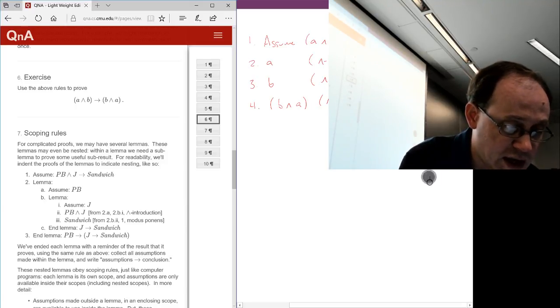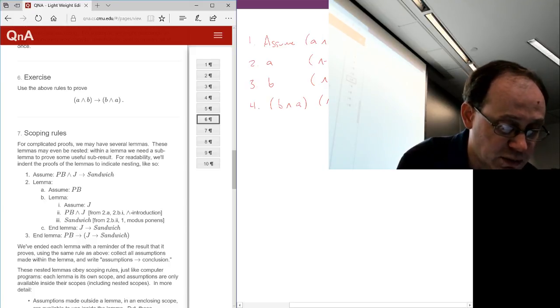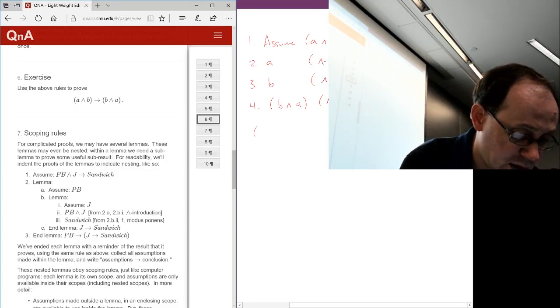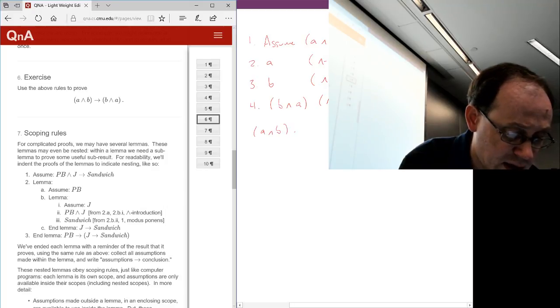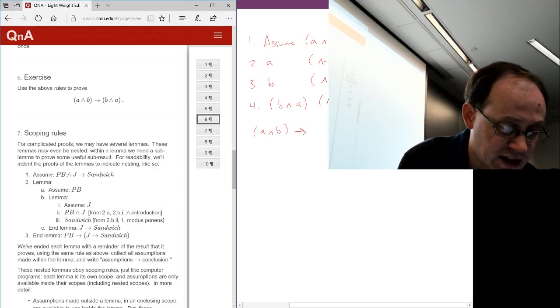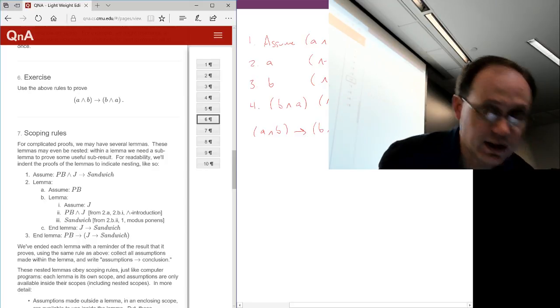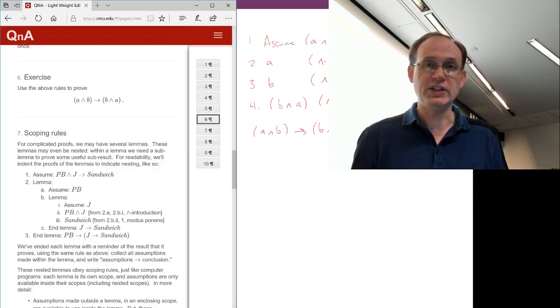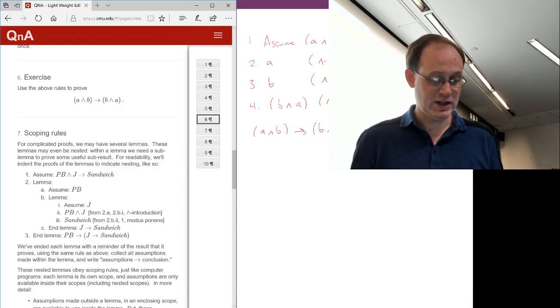At the end of the lemma, we can, from what we've written here, we can collect all of our assumptions and put them on the left-hand side of the implication. So that's A and B implies. And then we can pick any subset of our statements that we've proven, in this case number 4, and we'll put it on the right-hand side of the implication. And we're done. So that's a simple example of a proof in propositional logic. And hopefully it's an informative one.